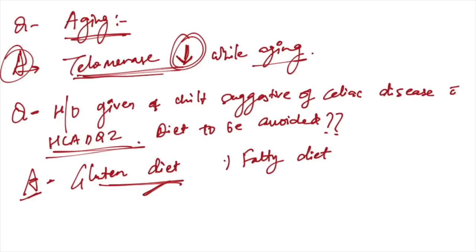History given of a child suggestive of celiac disease. HLA-DQ2 confirms celiac disease. Diet which should be avoided in celiac disease - gluten diet is avoided, not fatty diet.